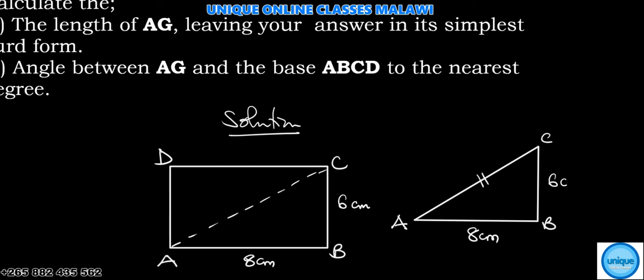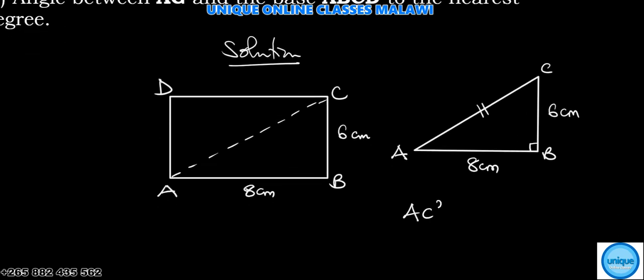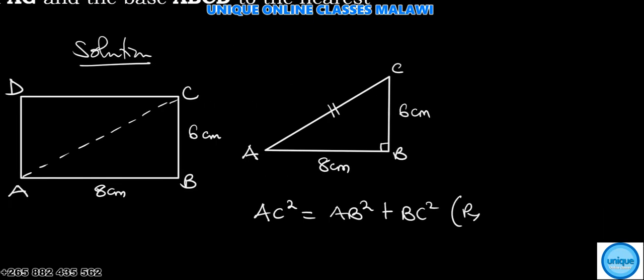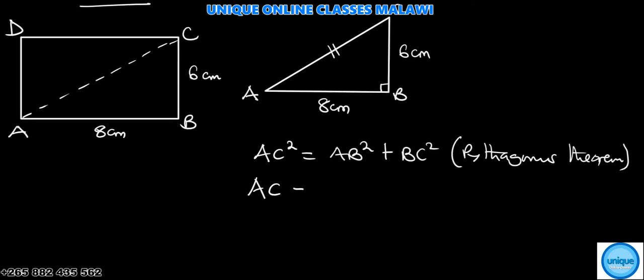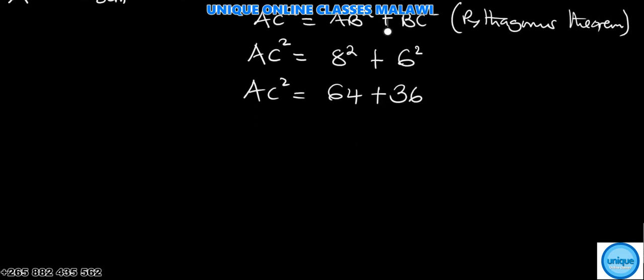This is a right angle, so we're going to do AC squared equals AB squared plus BC squared - that's Pythagorean theorem. AC squared equals 8 squared plus 6 squared. 8 squared is 64, then plus 6 squared is 36. If we add this, we get 100.